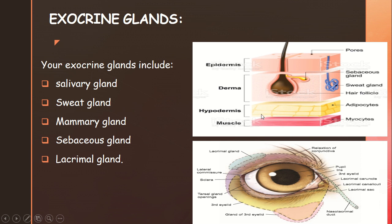The skin has layers: epidermis, dermis, and hypodermis, followed by muscles. The sweat glands are located within these layers of skin. Sweat glands produce sweat, which is released through the skin.